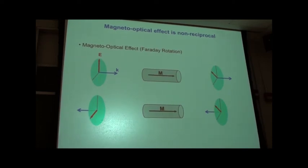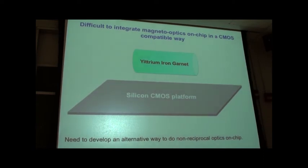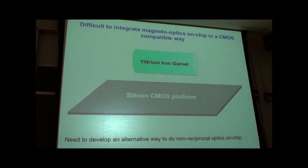One of the basic difficulties in trying to integrate these devices onto, say, a silicon computing platform is the fact that materials with non-reciprocal effects are typically very unusual materials — things like YIG and Garnet — that you don't usually find in standard electronics or optoelectronics. On the other hand, most standard optoelectronic materials like silicon do not have a magneto-optical effect. Therefore, it would be very interesting to figure out a way to do non-reciprocal optics on a chip using standard optoelectronic materials such as silicon.